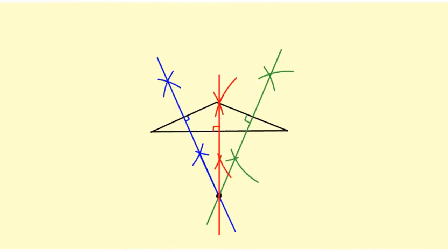I want you to notice on this one because it's an obtuse triangle, the circumcenter is actually outside the triangle. Let's see what the circumscribed circle looks like.